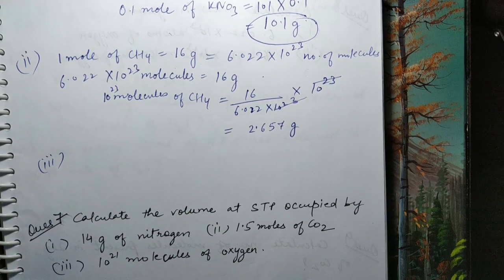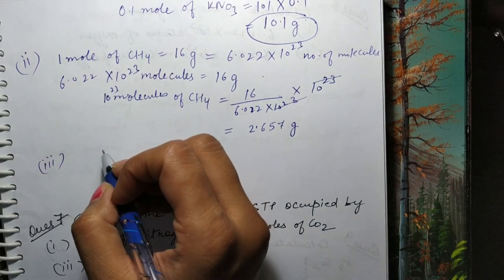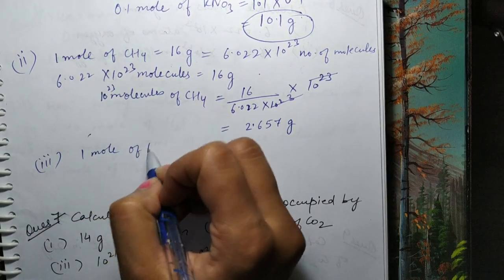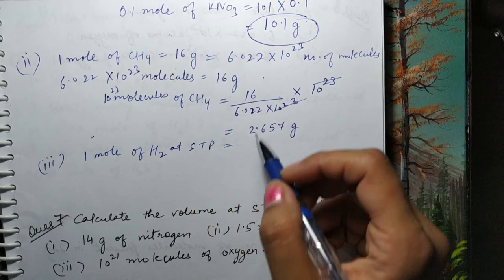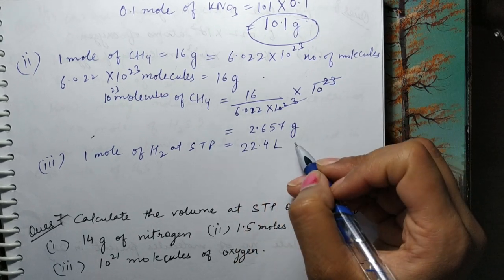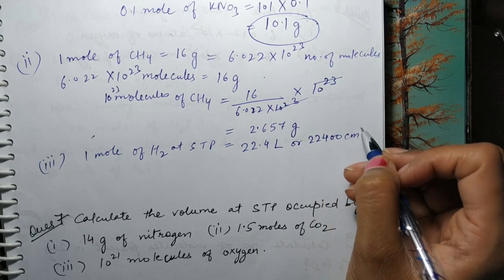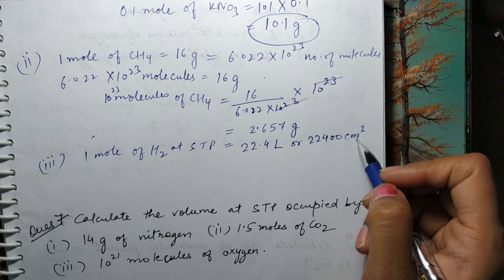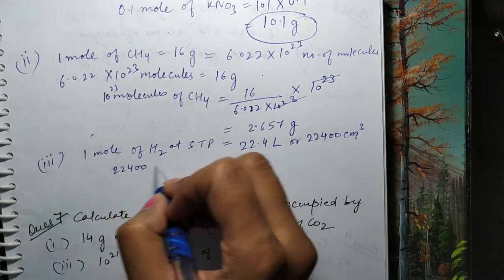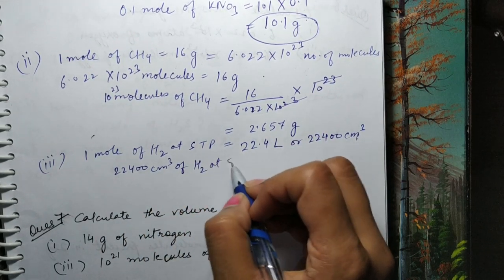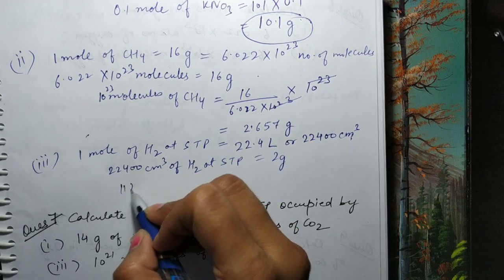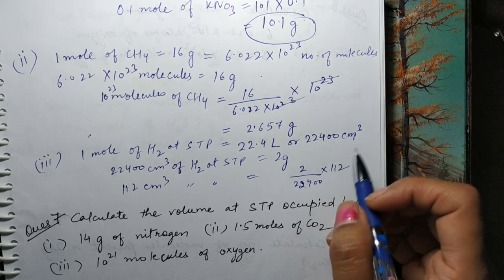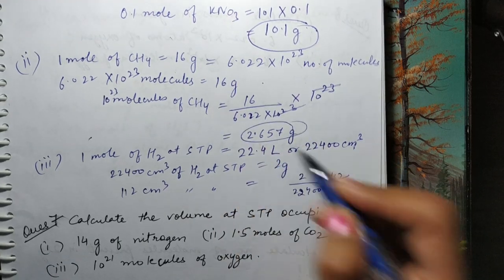Third part tha: 112 cm³ of hydrogen at STP. Volume ke case mein gram molecular volume use karte hain — 22,400 cm³ at STP. 1 mole of H₂ at STP ki volume = 22,400 cm³ aur mass = 2 gram. To 112 cm³ of H₂ at STP is equal to (2 ÷ 22,400) × 112 = 0.01 gram. Yeh teeno aapke answers ho gaye is question ke.